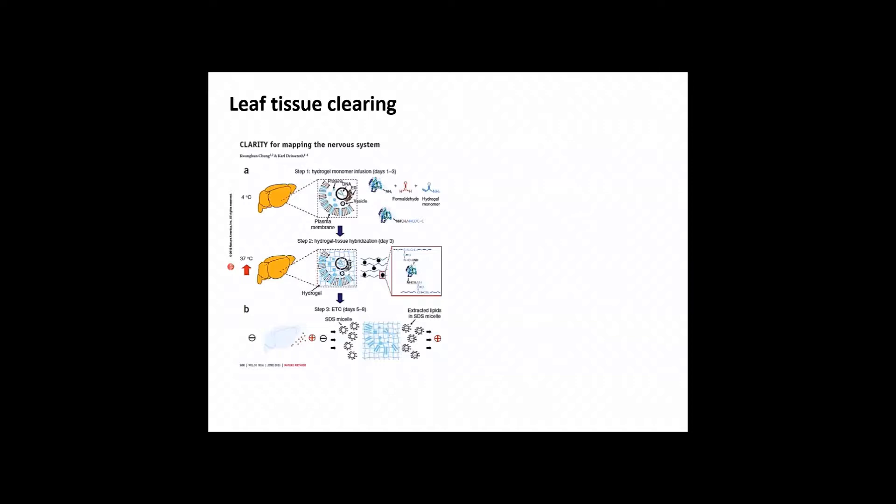For leaf tissue clearing, step one is based on the Clarity protocol. Clarity was first established using mouse brain, animal cells. What they did is first fix the tissue in a hydrogel monomer infusion, allowing fixation of the protein of interest as well as the structure. The second is hybridization, where you embed the whole cell in the hydrogel mixture to preserve all structures and proteins. The next step is to clarify it, which allows removal of pigments and lipids that can impede penetration for imaging.